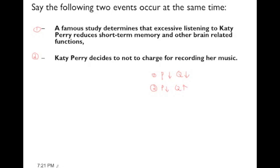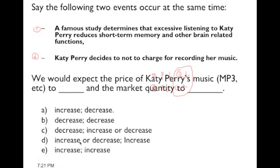Here's how you evaluate these questions. What happens to the price? Both changes push it down — we know it goes down. What happens to the quantity? One change pushes it down, the other pushes it up — we can't really say. So we have a mismatch. Price decreases for sure, but quantity is undetermined. So the answer is C: price goes down, but quantity could increase or decrease. Keep your work organized in these questions and you should do fine.